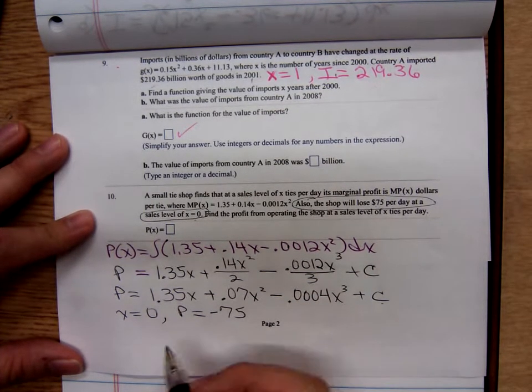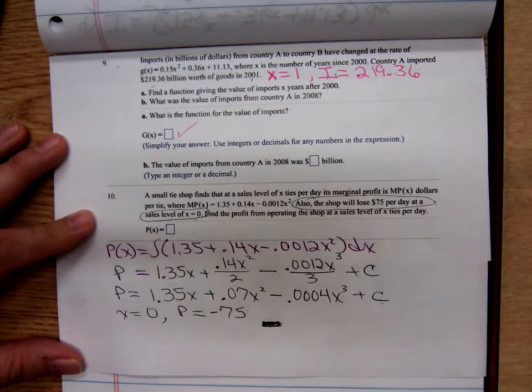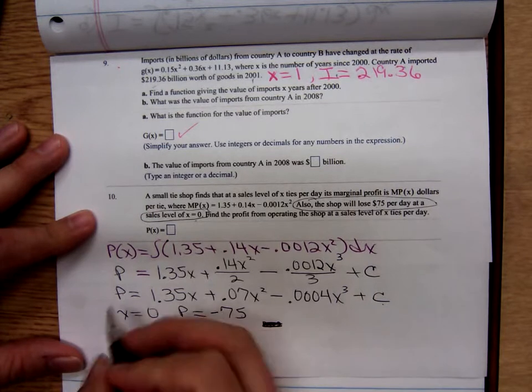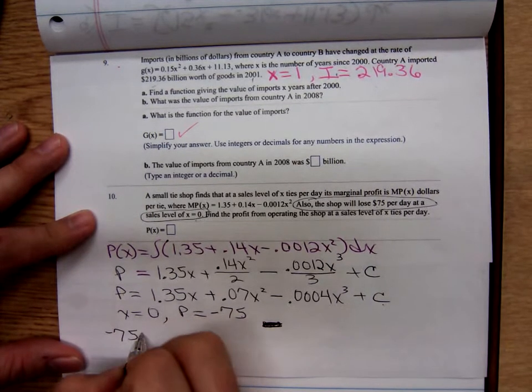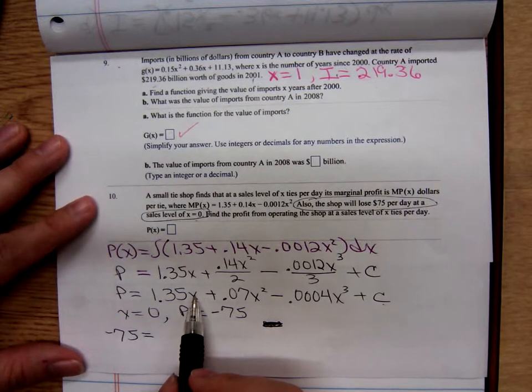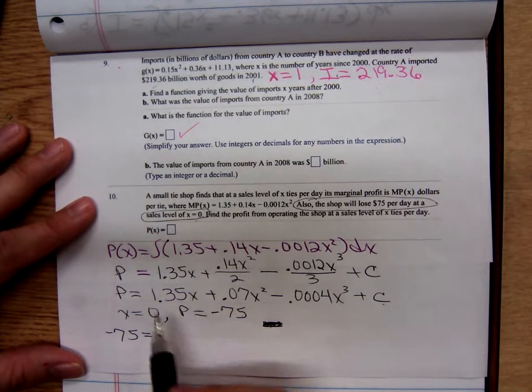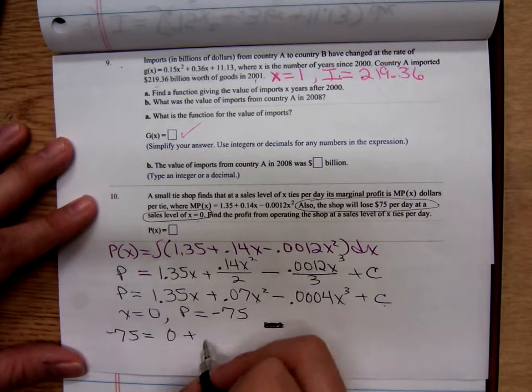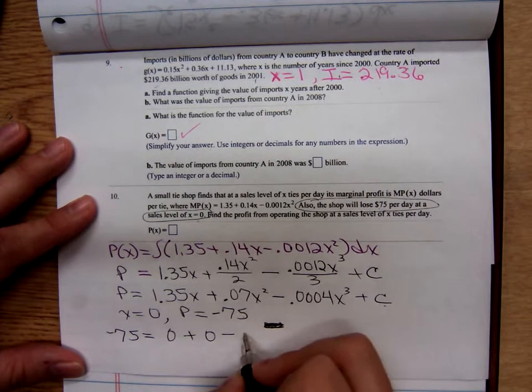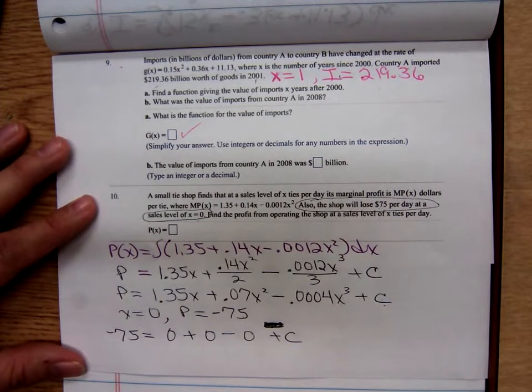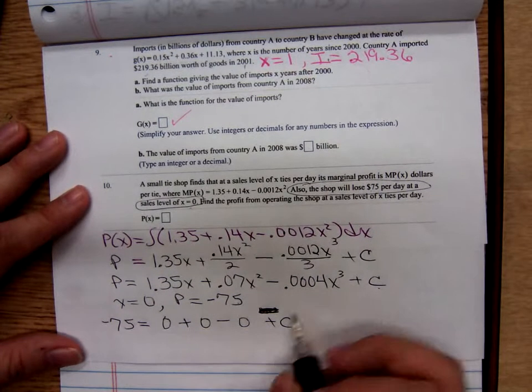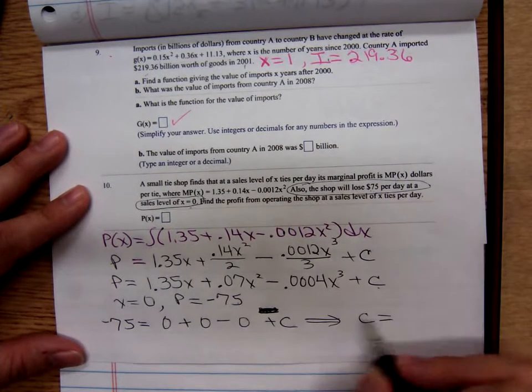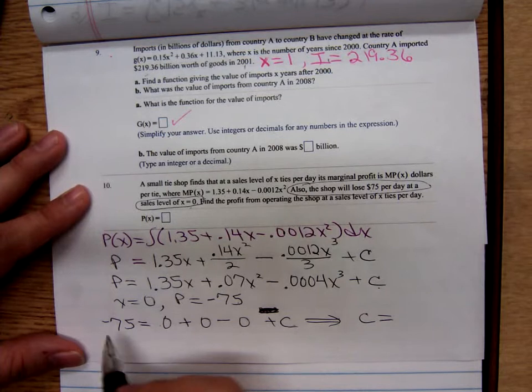So just ignore that little page 2 that's written there real small. So plug in negative 75 for P, and plug in 0 for x. 1.35 times 0 is 0, plus 0.07 times 0 squared is 0, minus another 0 plus C. That gives me a constant. Ah, this works out real nicely. What is the C value then? C is equal to negative 75.